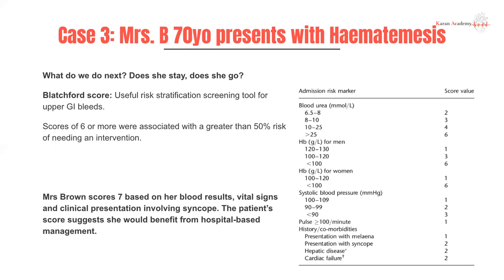What do we do next — does she stay or go home? We can use the Blatchford score, a risk stratification screening tool for upper GI bleeds. A score of six or more is associated with a 50% risk of needing an intervention soon after the bleed. Mrs. Brown scores seven, and the score would recommend she would benefit most from hospital-based management. This is not a score you need to memorize for exams.